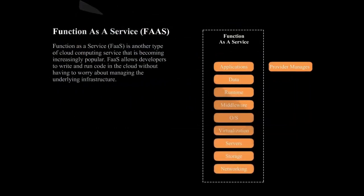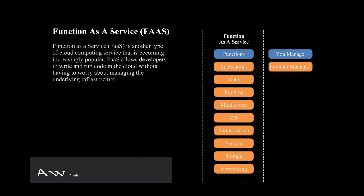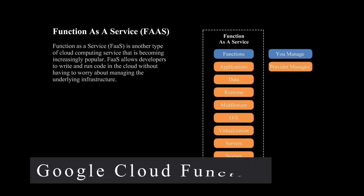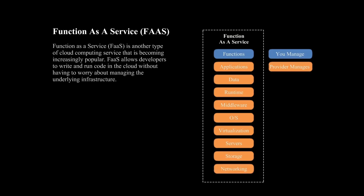Function-as-a-Service is another type of cloud computing service that is becoming increasingly popular. It allows developers to write and run code in the cloud without having to worry about managing the underlying infrastructure. The most well-known example is Amazon Web Services Lambda, which allows you to run code without provisioning or managing servers. Another example is Google Cloud Functions. With Function-as-a-Service, developers can write and deploy code in a variety of programming languages and runtimes and only pay for the resources used while the code is running. This can save money, make the business more efficient, and make it easier to grow and change. Function-as-a-Service also enables serverless architectures and event-driven computing, which can lead to new kinds of apps and use cases.